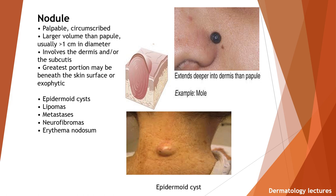Nodule. It is a palpable, circumscribed lesion with larger volume than a papule, usually greater than one centimeter in diameter, involving the dermis or the subcutis. It involves the greatest portion of skin beneath the skin surface or may be exophytic. Examples are epidermoid cysts, lipomas, metastasis, neurofibromas, and erythema nodosum. Here you can see the example of a mole and epidermoid cyst.